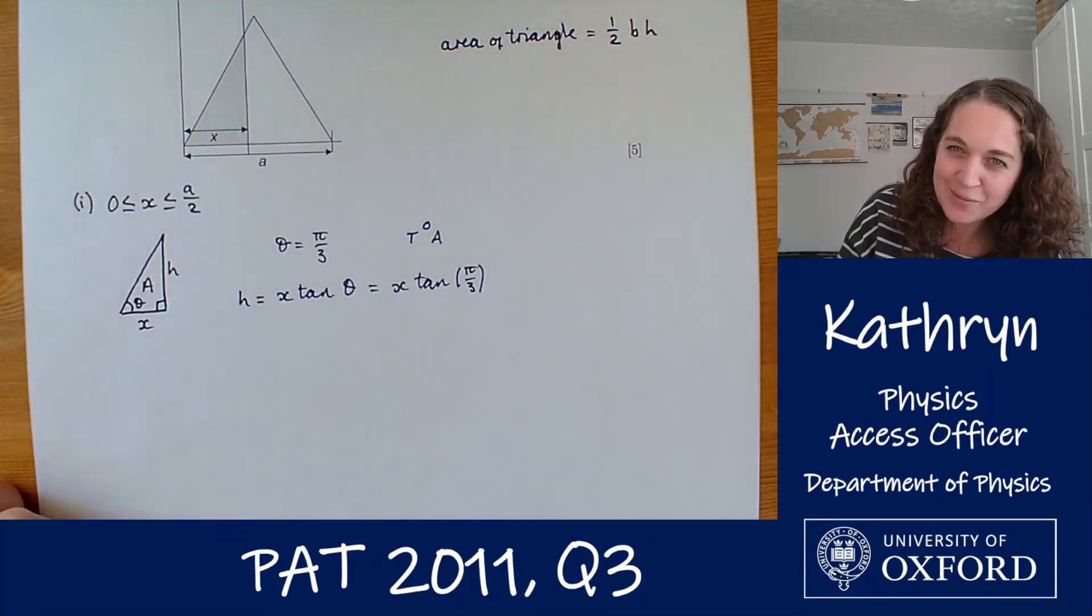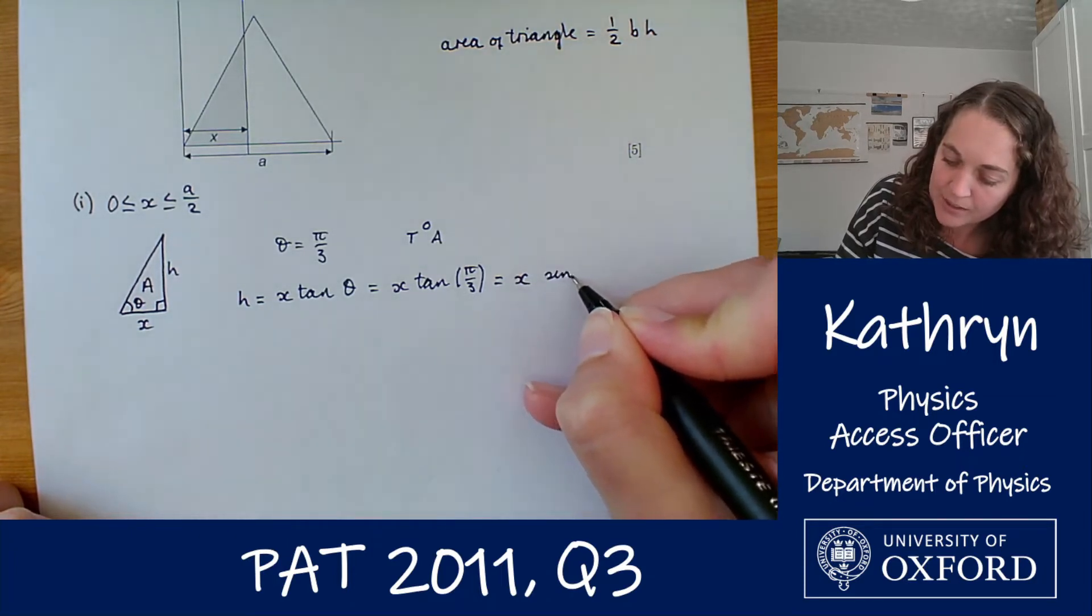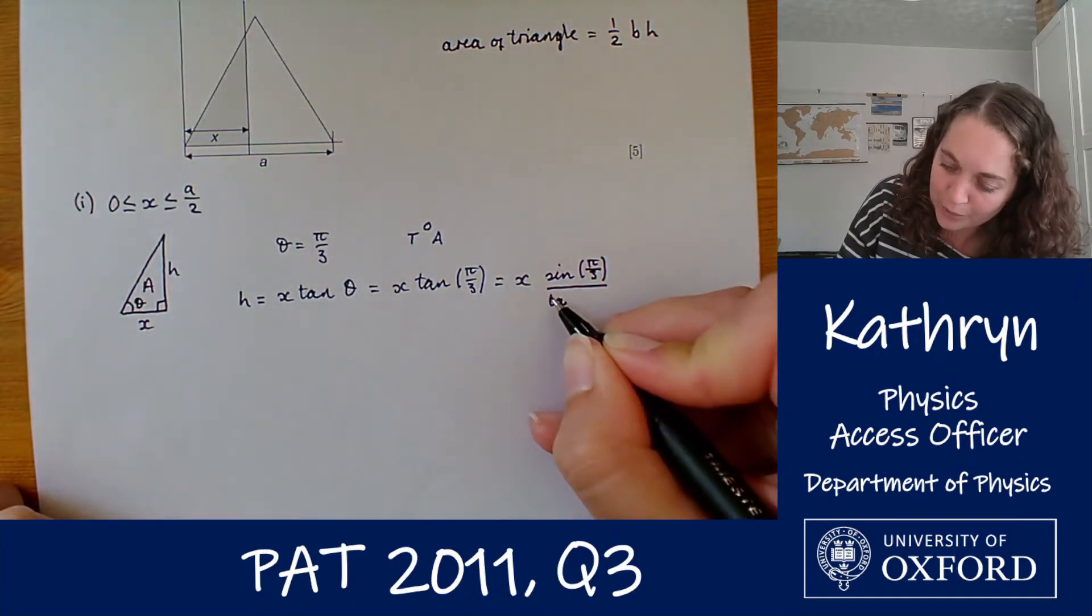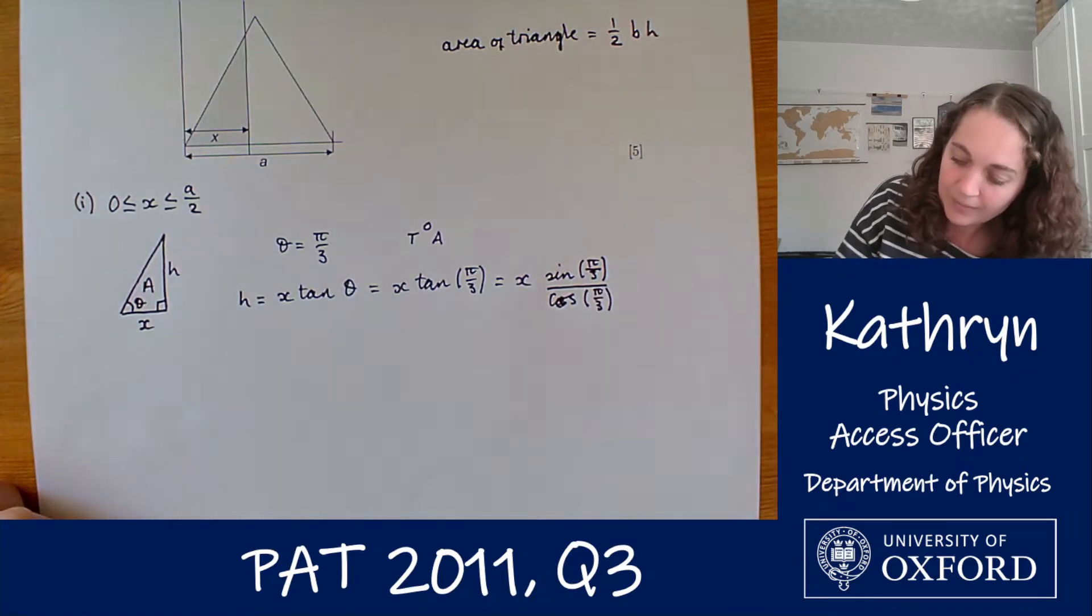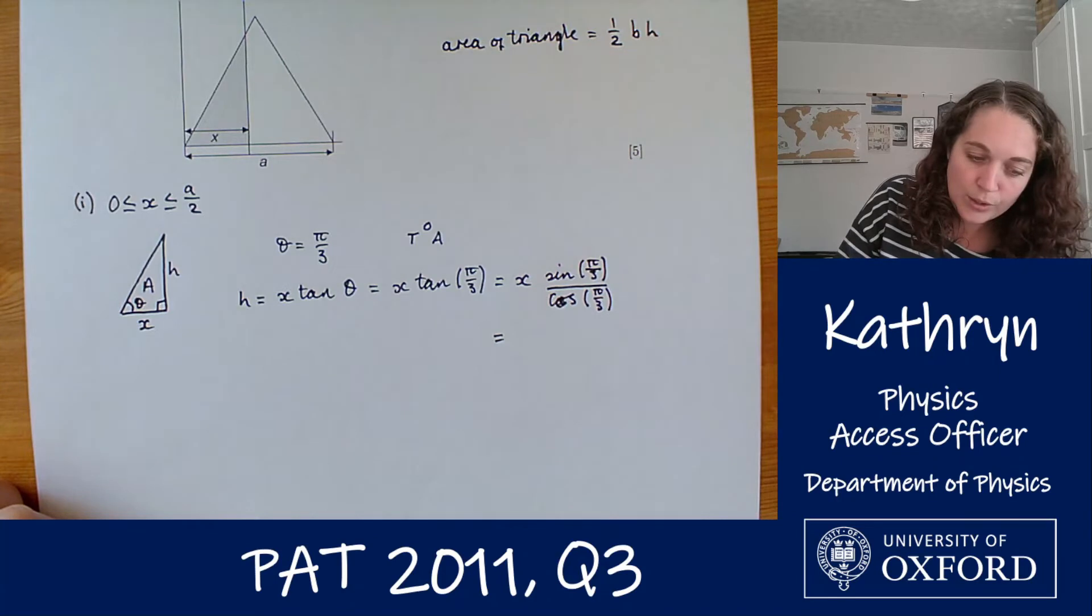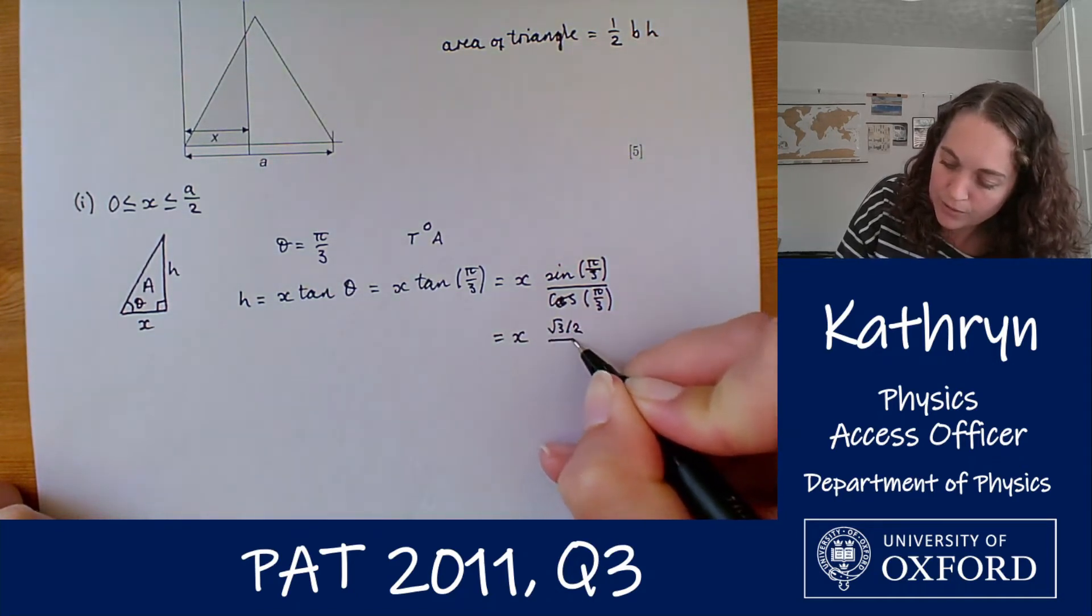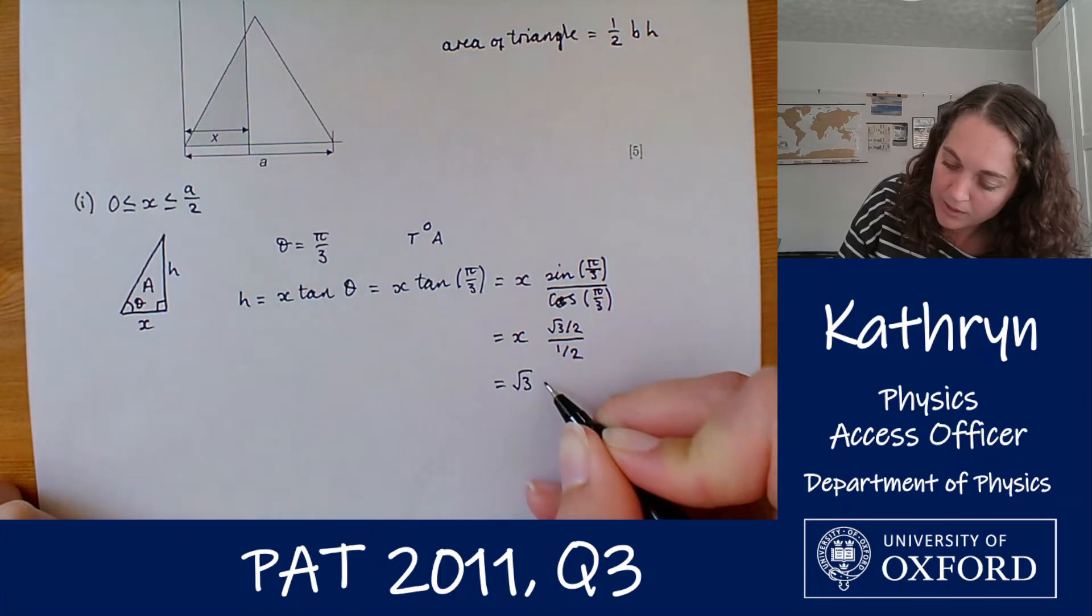Now I can never remember what tan of these useful angles is but I can remember what sines and cosines are. So this is the same as x times sine of pi by 3 divided by cos of pi by 3. Tan equals sine over cos. And I know what both of those are so sine of pi by 3 is root 3 over 2. Cos of pi by 3 is a half. So we're looking at x times root 3 over 2 divided by a half or root 3 times x.